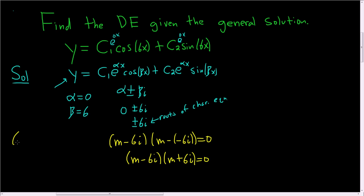Now recall, if you have a minus bi times a plus bi, this is equal to a squared plus b squared. So in this case, it's simply m squared plus 6 squared equals 0. So that gives us m squared plus 36 equals 0.